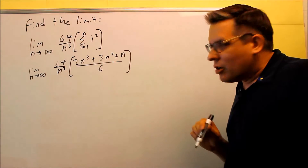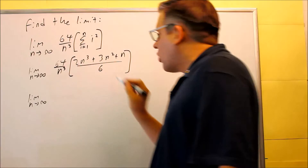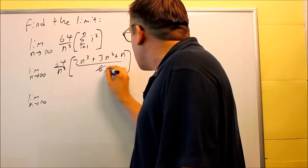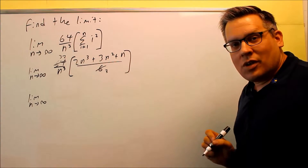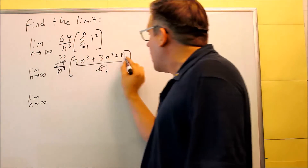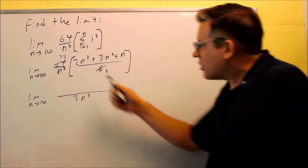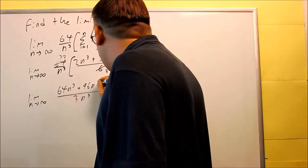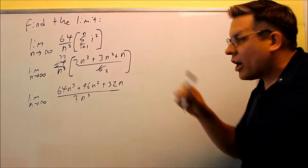Now we're ready to do some simplifying. First we can cross-cancel the 64 and the 6: divide by 2, getting a 3 on the bottom and 32 on top. Now I'll multiply across the top and across the bottom. Multiplying 32 times everything on top, and the bottom gives 3n cubed. The top expands to 64n cubed plus 96n squared plus 32n. Now I don't need the brackets anymore since I've distributed.